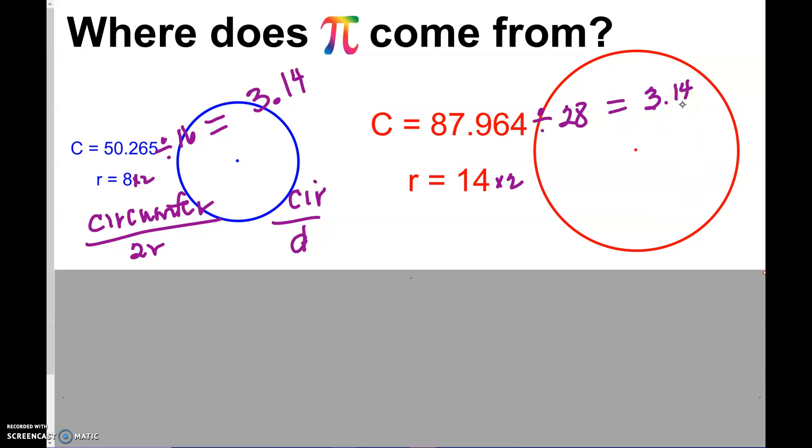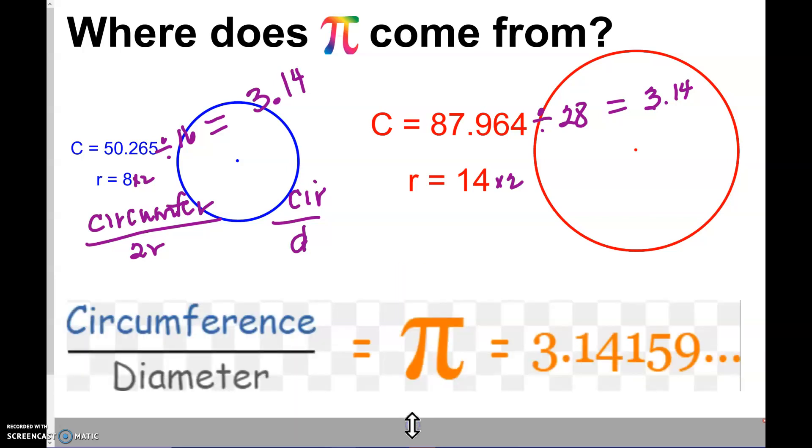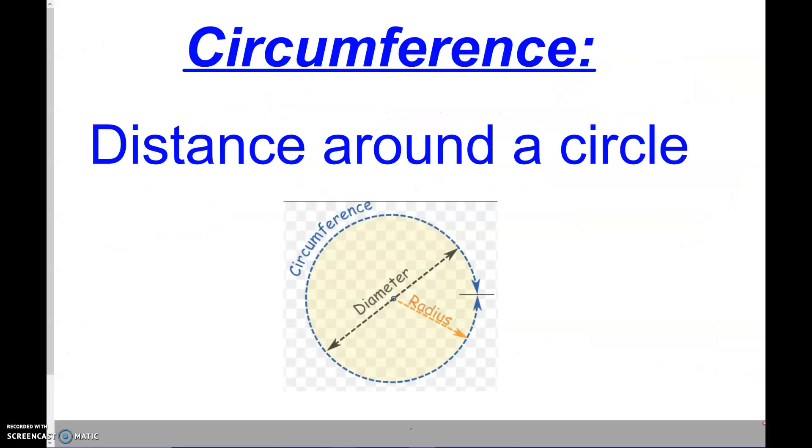So pi comes from the ratio of taking your circumference and dividing by your diameter. Circumference divided by diameter gives you pi.